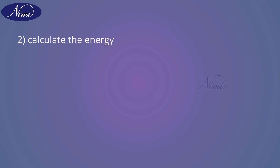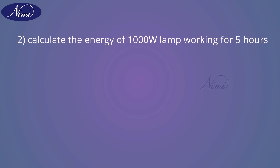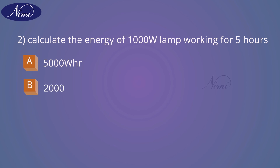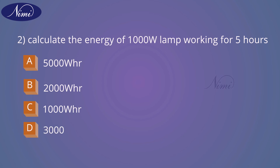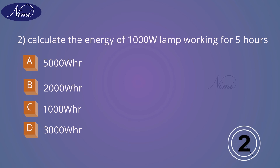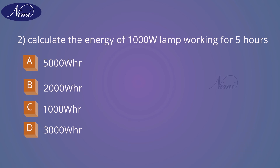Question number two: Calculate the energy of a 1000 watt lamp working for 5 hours. Options — A: 5,000 watt-hours. B: 2,000 watt-hours. C: 1,000 watt-hours. D: 3,000 watt-hours. And the answer is A — 5,000 watt-hours.